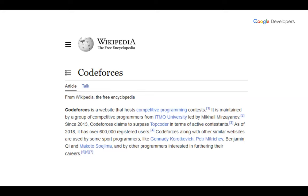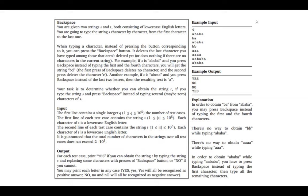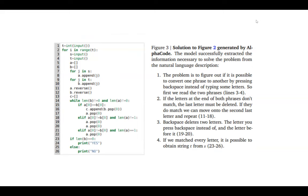They chose Codeforces, a popular platform with about 600,000 people — competitive programmers who treat coding as a sport. AlphaCode competed against this group. The system is bigger than just a large language model, and they called it AlphaCode. The tasks are similar to LeetCode: you get a task description and also example input/output for unit testing. These tasks are considered medium-level, and AlphaCode can solve them — solutions I personally wouldn't solve quickly.